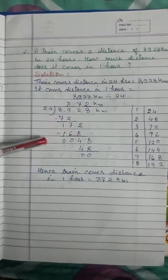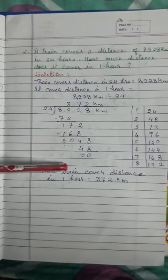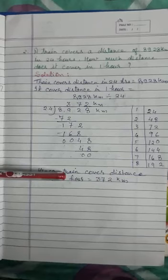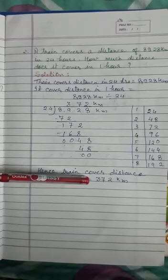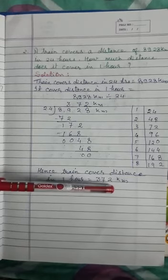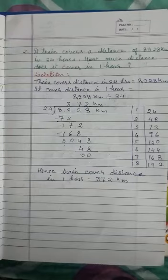Write the answer. Hence, train covers distance in one hour equal to 372 kilometers. Ok students, thank you.